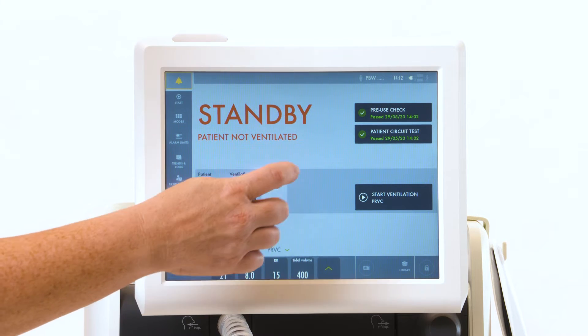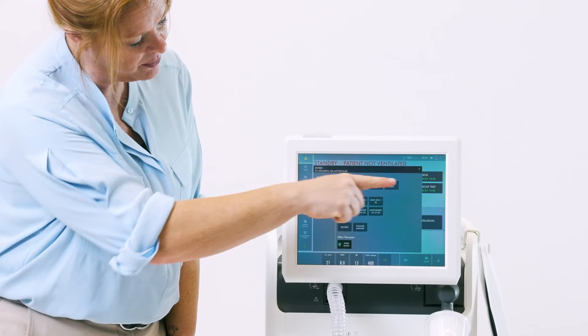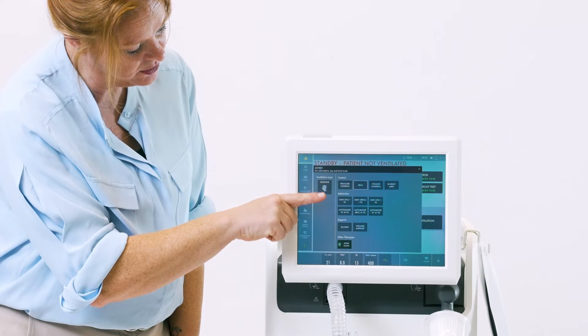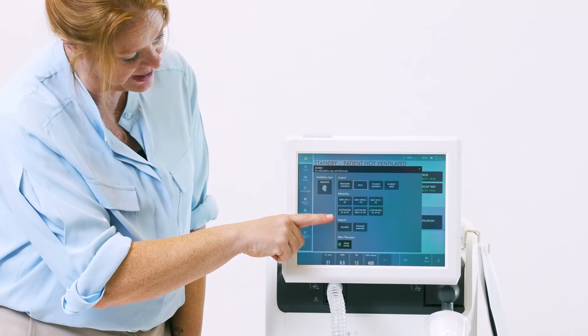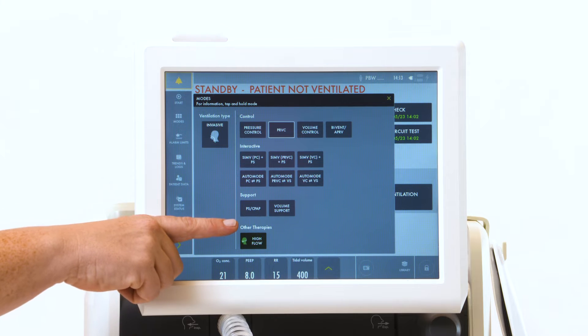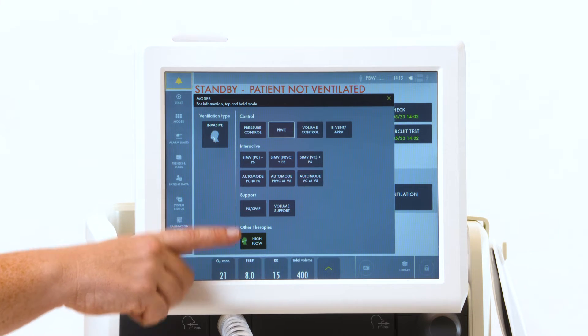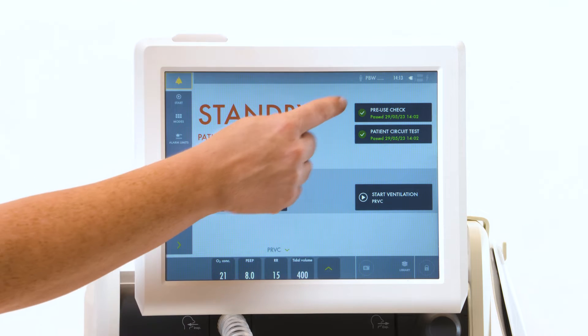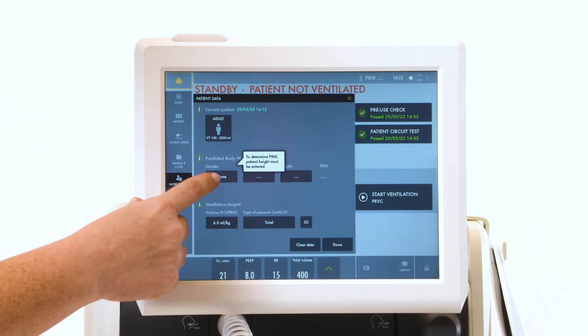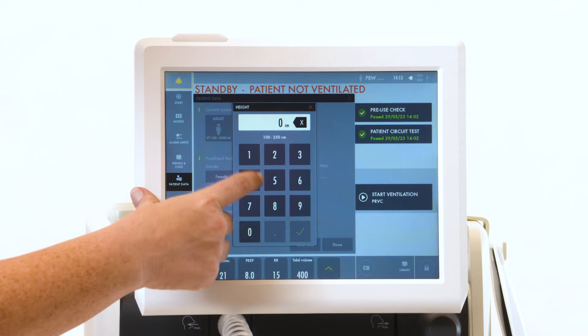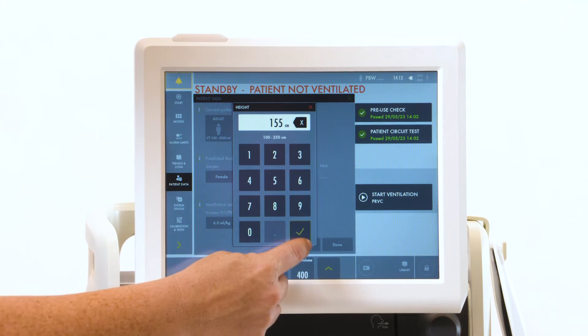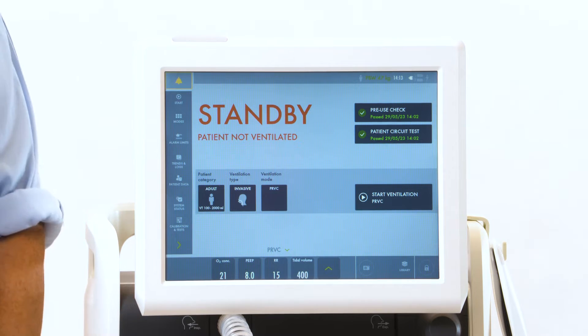Your modes are located here, the top ones being anything control, your middle two are your interactive modes, at the bottom are supported modes, with your high flow at the very end. Select patient data, put in their gender and their height in order to do predicted body weight.